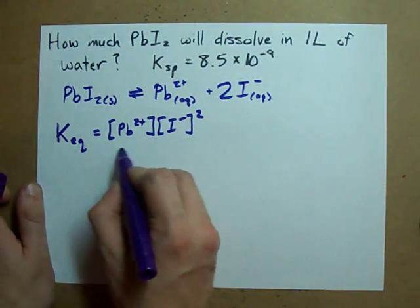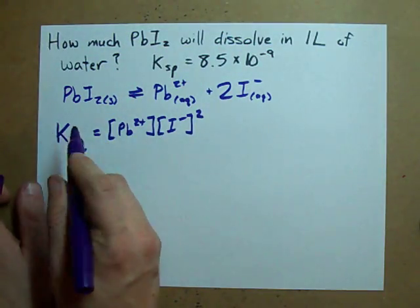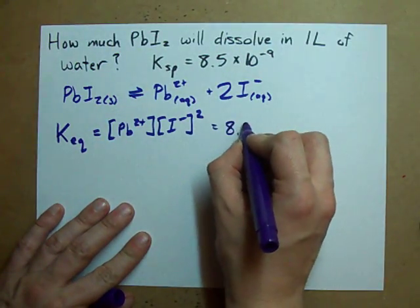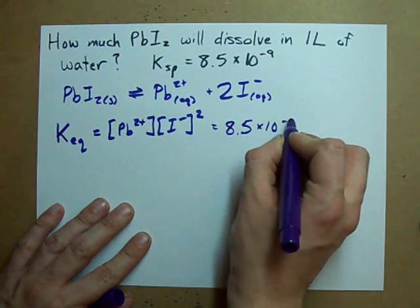So this is the equilibrium for the dissolving of PbI2, and this is what we've been given: 8.5 times 10 to the minus 9.